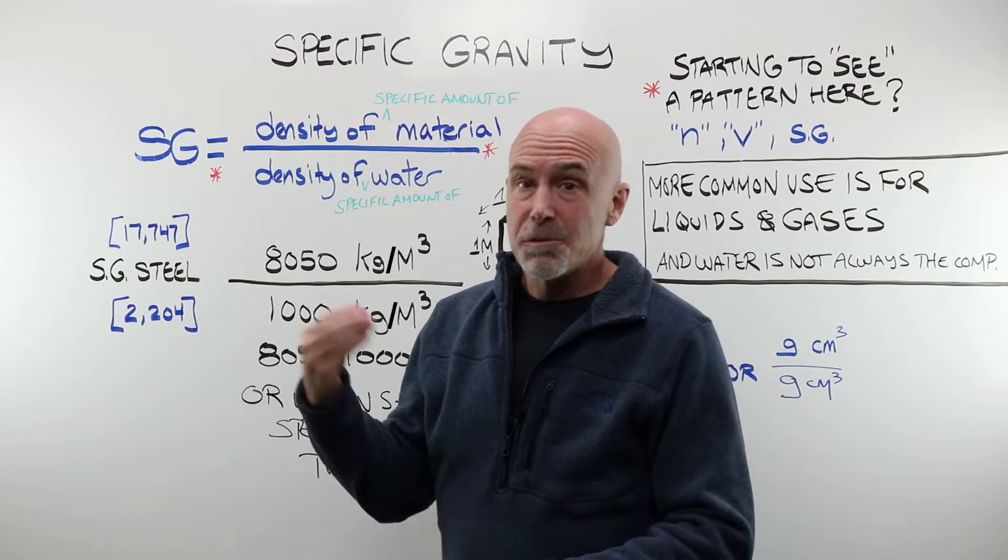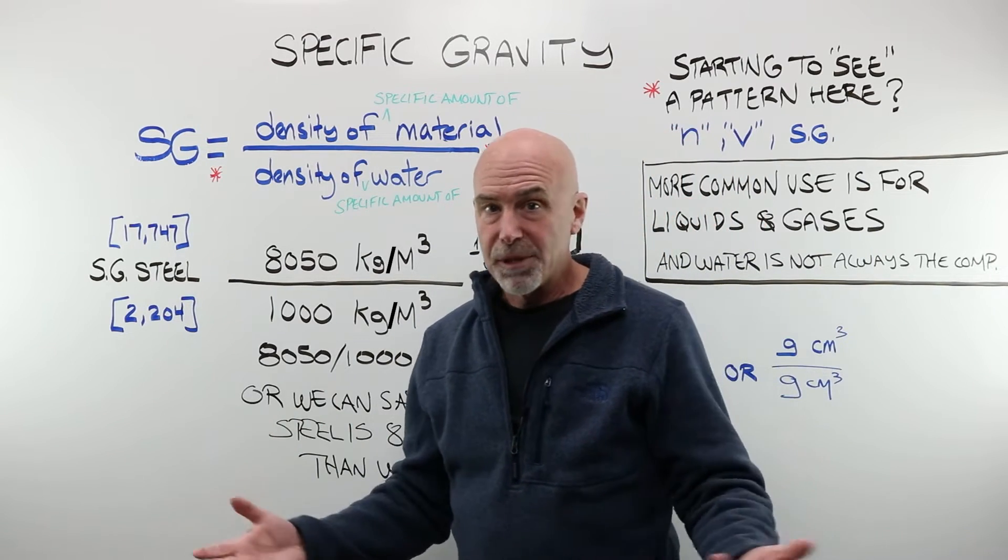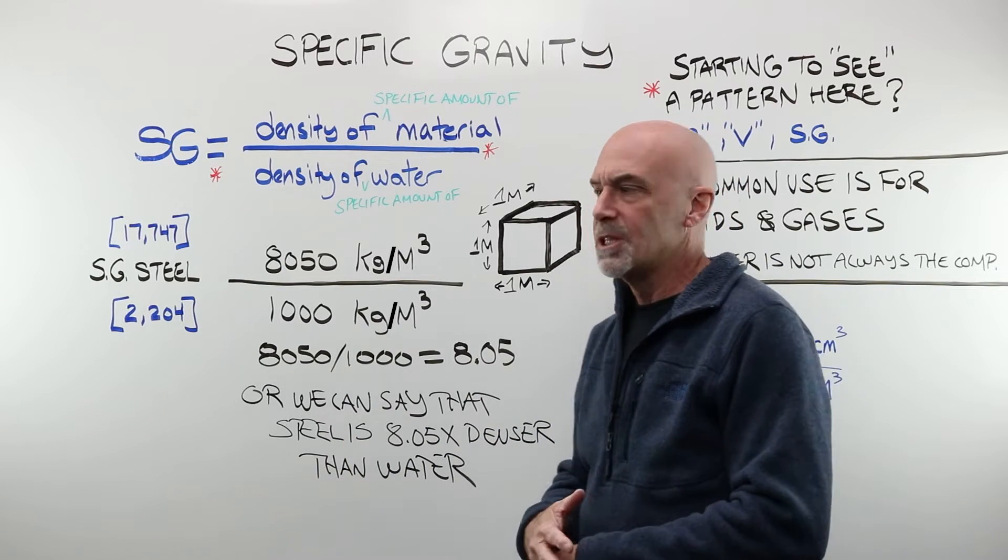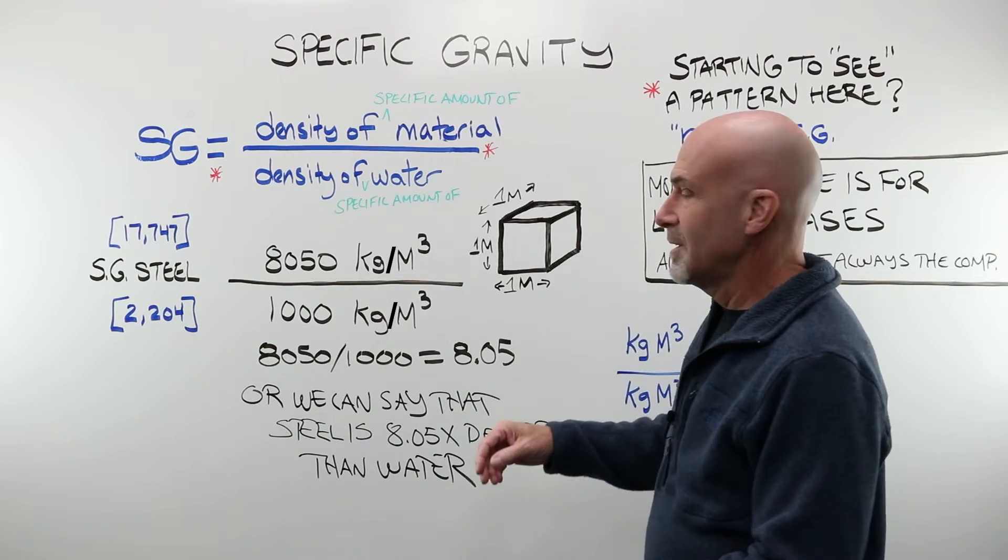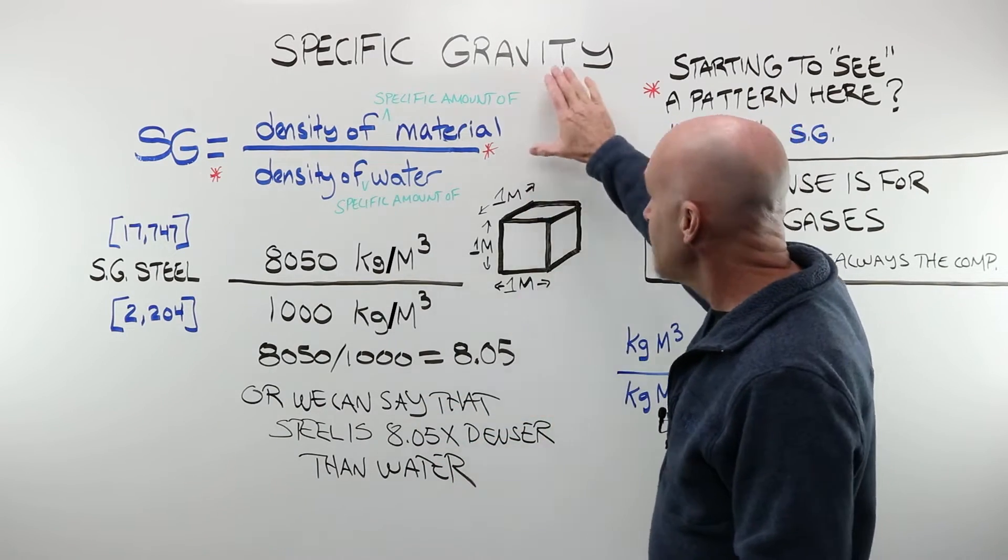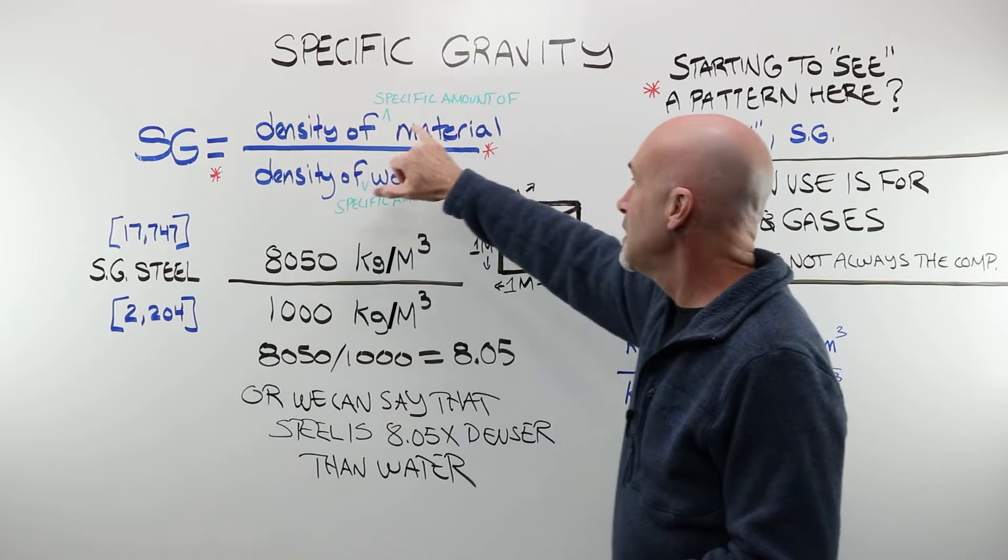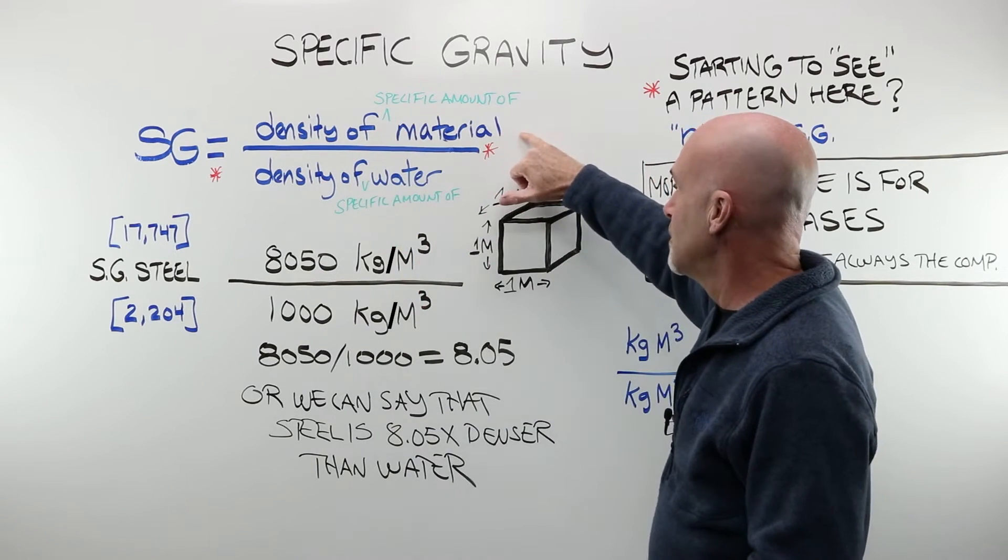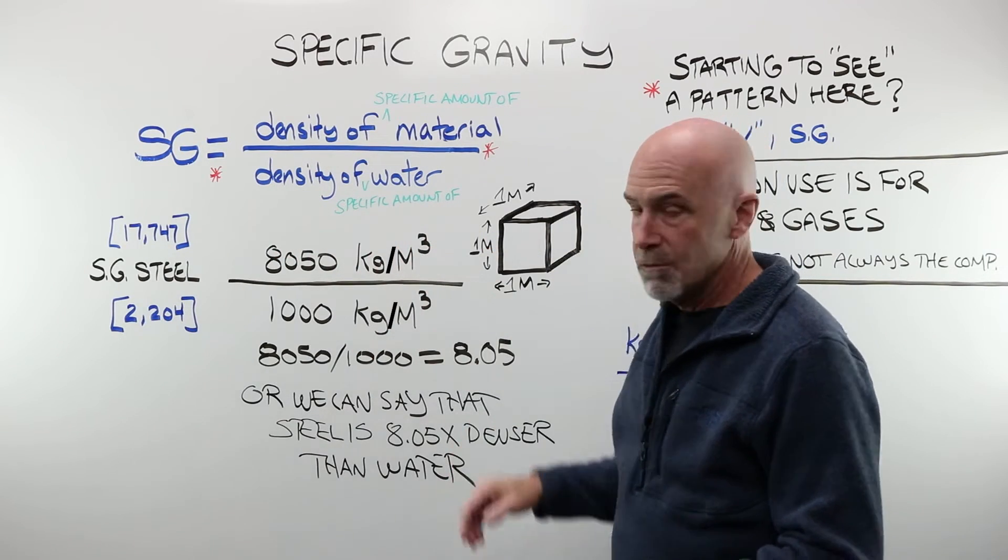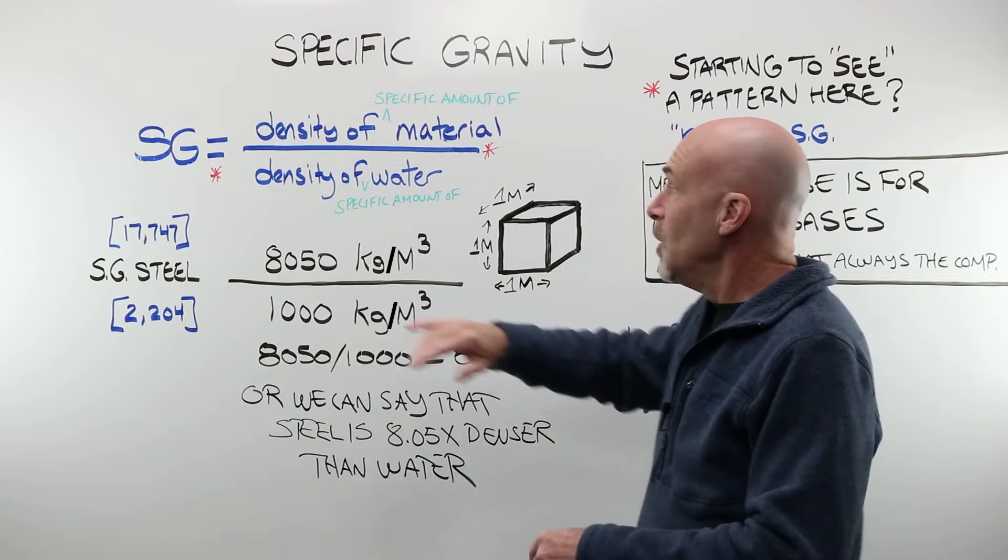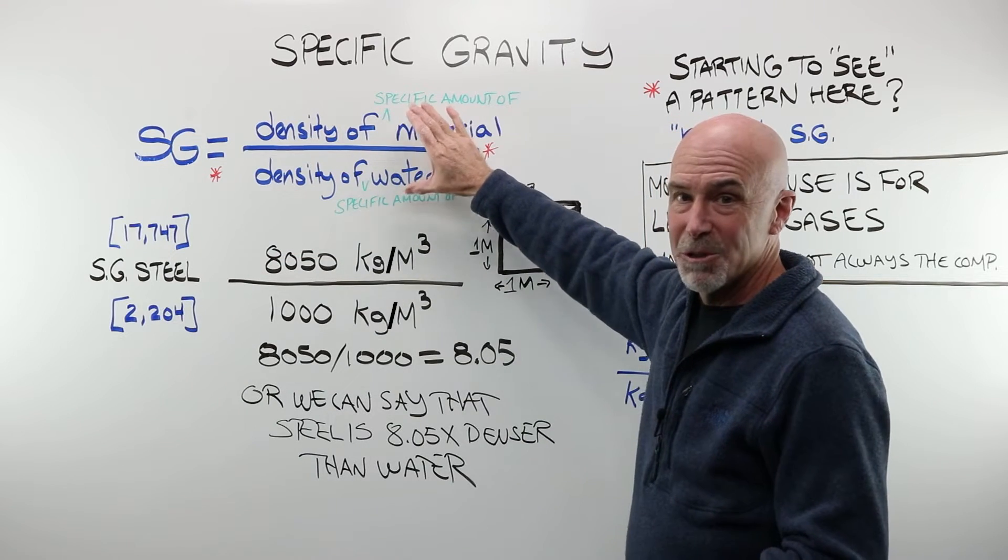Before we jump into specific gravity and lens materials, let's talk about its broader application. And that really will help when we switch gears to our next whiteboard. For our purposes, because it's not always done this way, we say that specific gravity is the relationship between the density of a specific amount of a given material when compared to the density of a specific amount of water. We are not solving for anything. We are simply rewriting the relationship between two things.